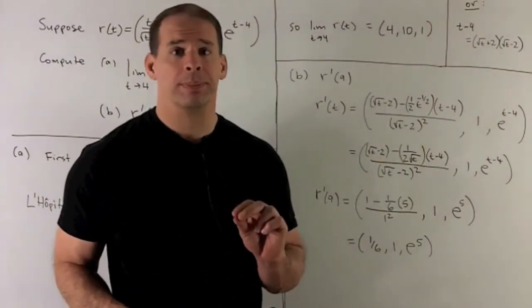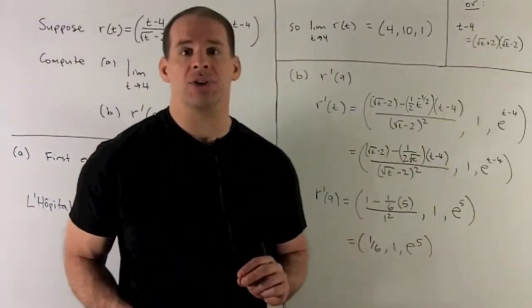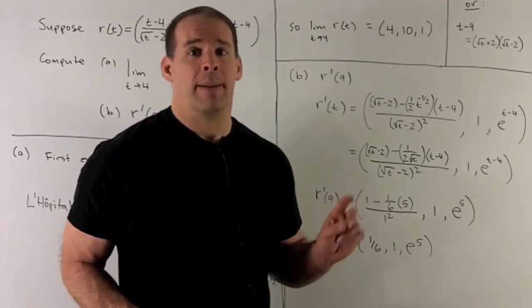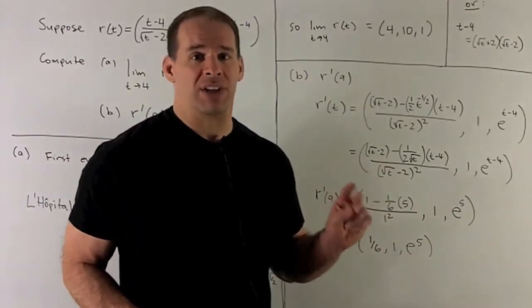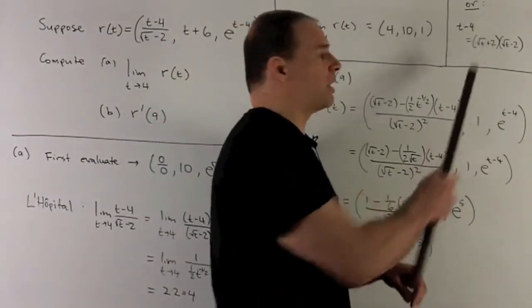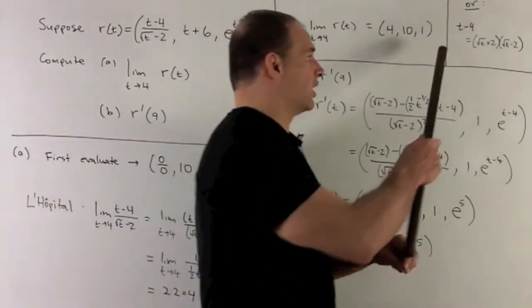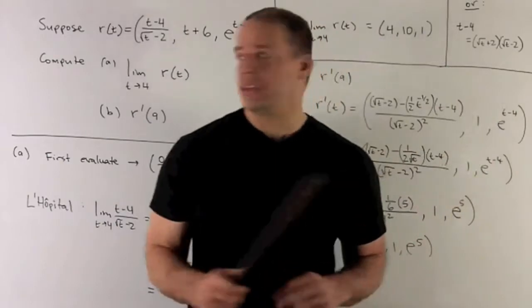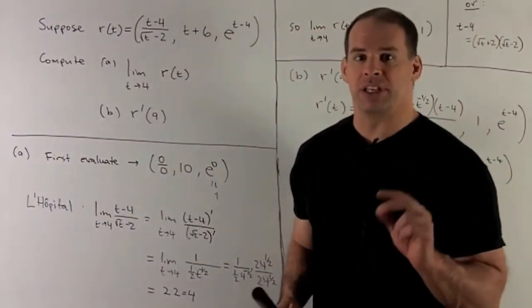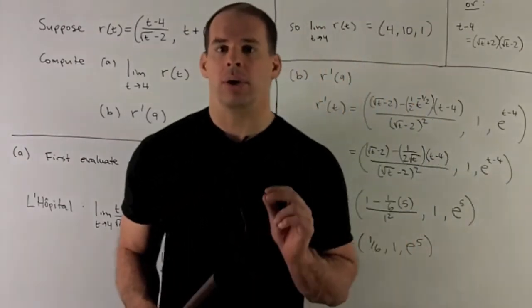Another way to do this: I could notice that t-4 is the difference of two squares. That's (√t + 2)(√t - 2). The √t - 2 factors out. When I put 4 into √t + 2, we get 4 again. Another way, which is actually the same trick, is to rationalize the denominator by multiplying by √t + 2. You'll get the same answer.